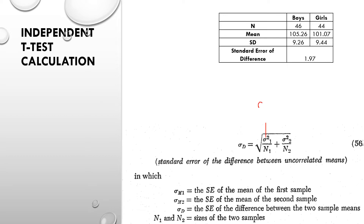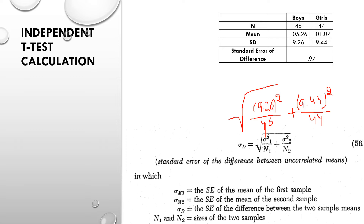Applying the formula: the standard deviation of group 1 is 9.26, so we square 9.26 and divide by n1 which is 46. Then we add the standard deviation of group 2, which is 9.44, square that value and divide by n2 which is 44. Then we take the square root of the entire expression.